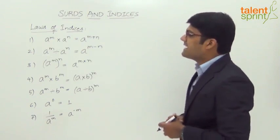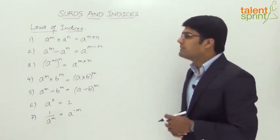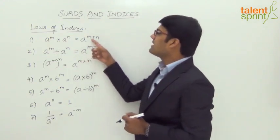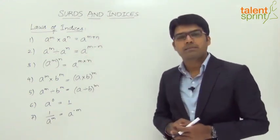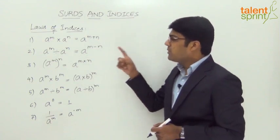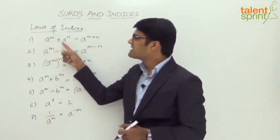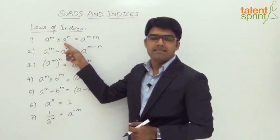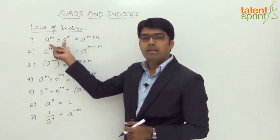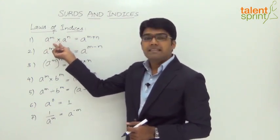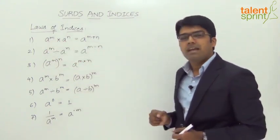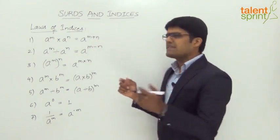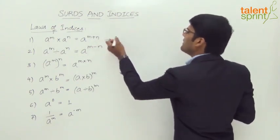The first rule says: a to the power of m, multiplied by a to the power of n, equals a raised to the power of m plus n. If you look at the bases, both bases are equal — the base in the first term is a, and the base in the second term is also a. Since the bases are equal and are being multiplied, the powers can be added, giving m plus n as the resultant power.